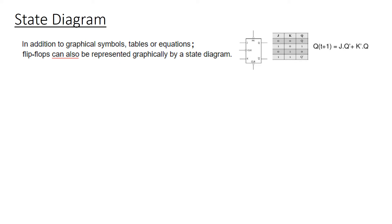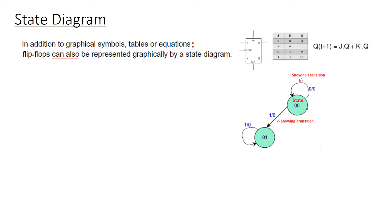In addition to graphical symbols, tables, or equations, flip flops can also be represented graphically by a state diagram. You can represent a flip flop by symbols, by state table or truth table, and also by equation. In addition to these, we can represent a transition of the truth table by what is known as a state diagram. We are talking about a JK flip flop with four states shown as four circles.